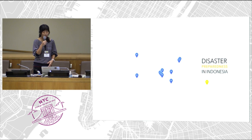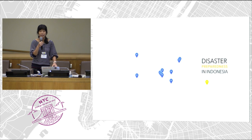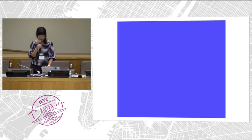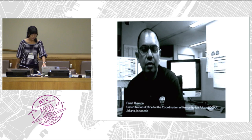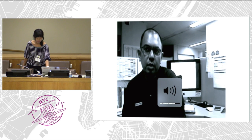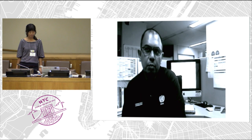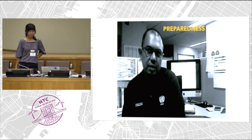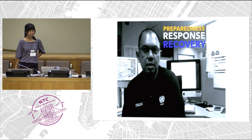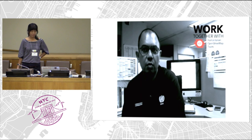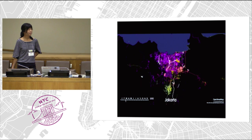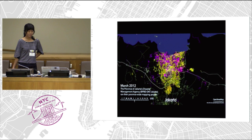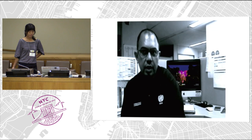Instead of me describing the project, we interviewed our field colleagues based in Jakarta to tell the story about OpenStreetMap, United Nations, and humanitarian partners in Indonesia. My name is Faisal Tamrin. I'm working for OCHA Indonesia in Jakarta as an information management officer. Indonesia is a country where small and medium-scale disasters are commonplace — last year we had more than 1,500. In 2012, we worked together with national and regional disaster management agencies, AUSAID, World Bank, and the University of Indonesia to map Jakarta as part of flood preparedness activities. At the same time, the data is being used for a contingency plan.